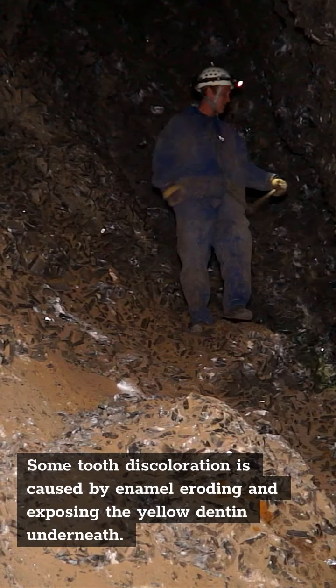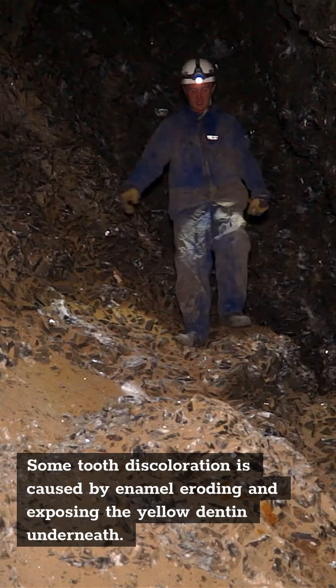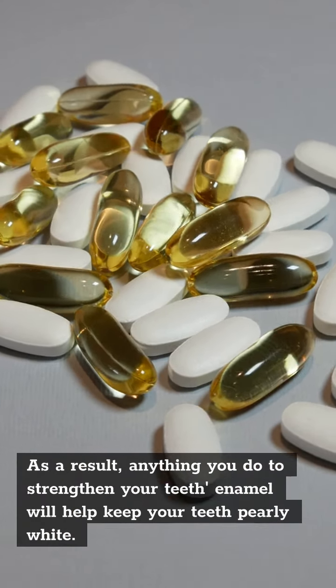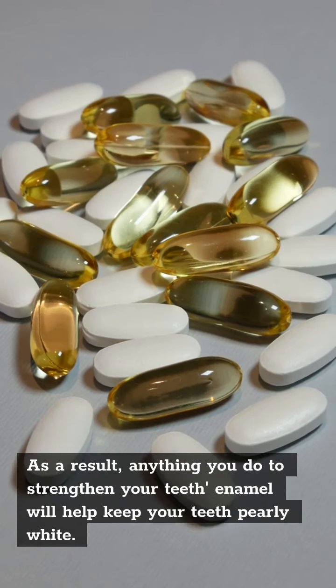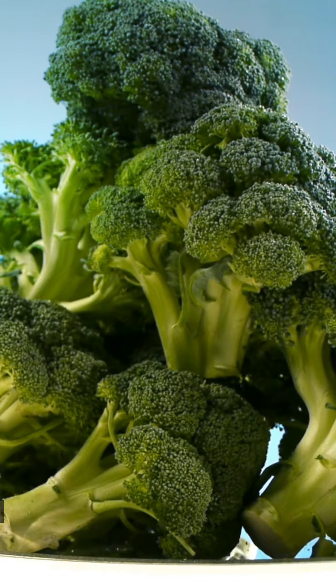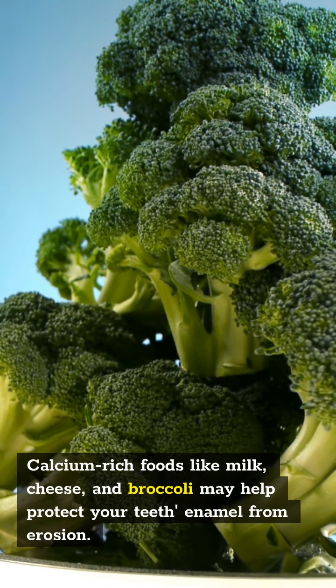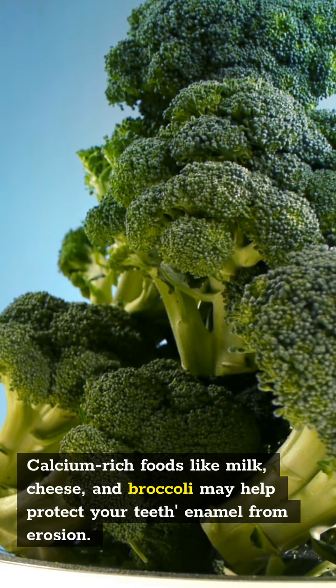Make sure you get plenty of calcium in your diet. Some tooth discoloration is caused by enamel eroding and exposing the yellow dentine underneath. As a result, anything you do to strengthen your teeth enamel will keep your teeth pearly white. Calcium rich foods like milk, cheese and broccoli may help protect your teeth enamel from erosion.